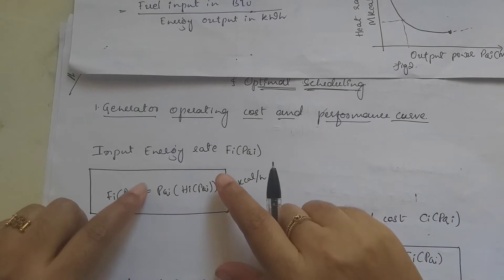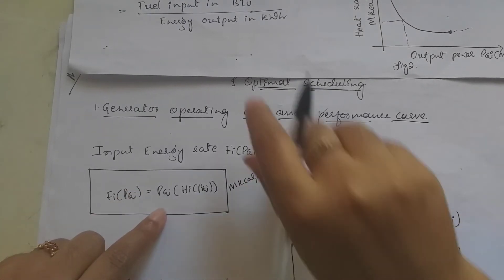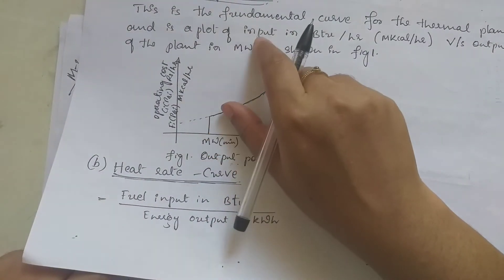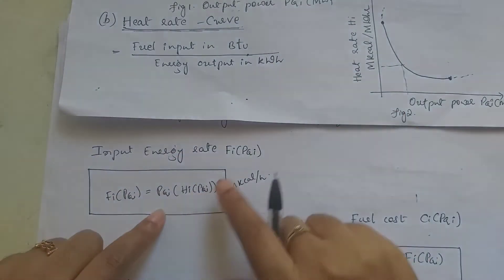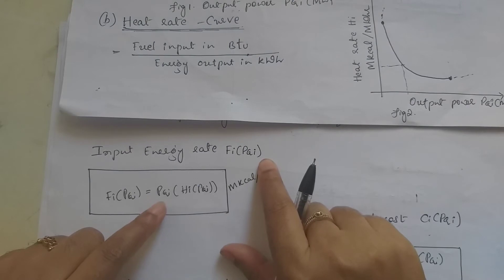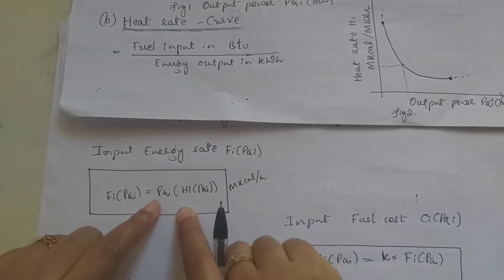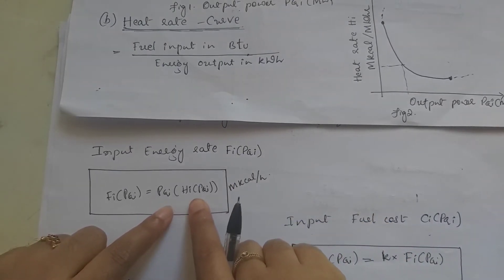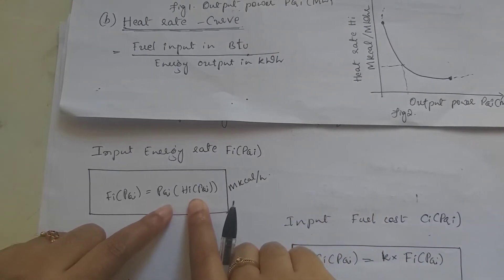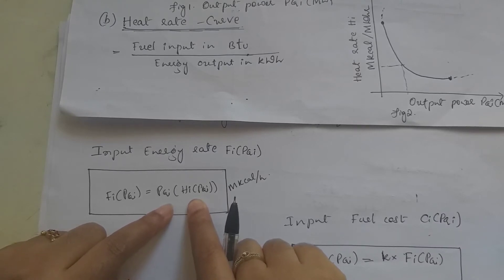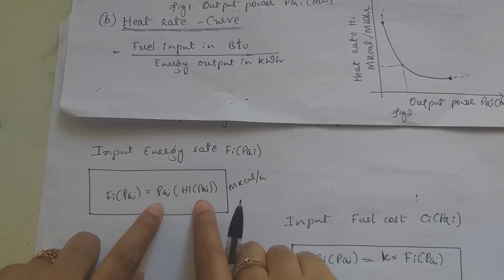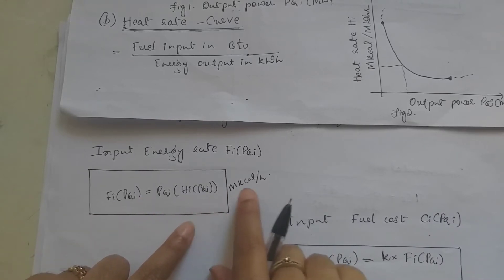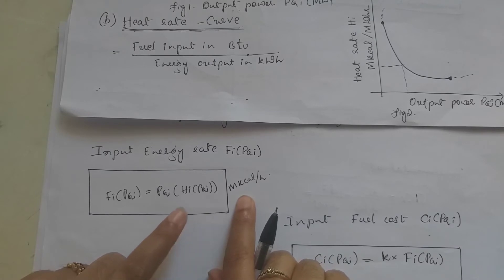The input energy rate is given by the input-output curve and is represented by Fi(PGi), given by the formula PGi multiplied by Hi(PGi). Hi is obtained from the heat rate curve. The heat rate curve is approximated as: Hi(PGi) = Ai' / PGi + Bi' + Ci' × PGi, with units of m kilocalorie per megawatt hour. Therefore Fi(PGi) = PGi × Hi(PGi), and the input fuel cost is K × Fi(PGi), where K is a constant. The unit of Fi is m kilocalorie per hour.